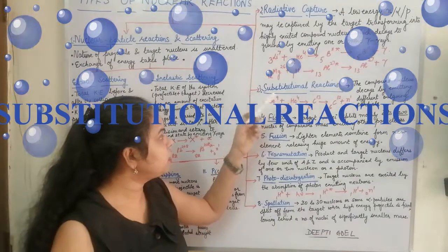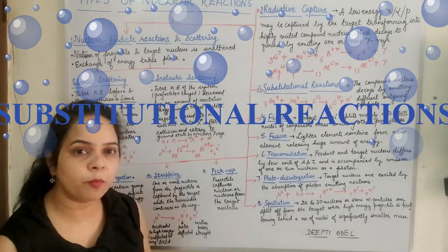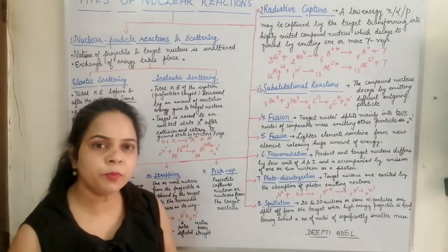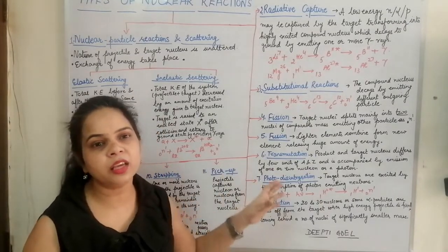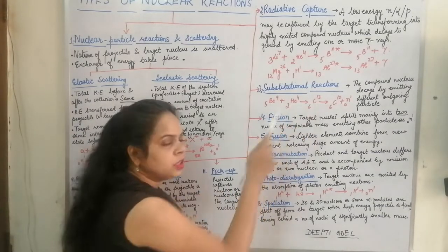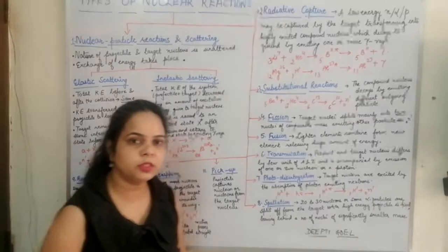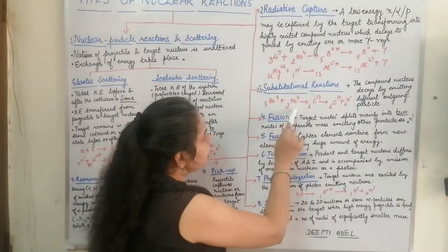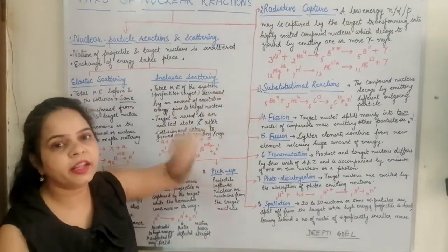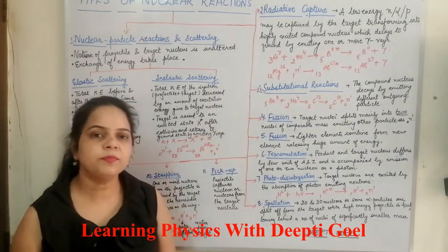The third type is the substitutional reaction. Here, a compound nucleus is also formed, but it gives out a product nucleus and a particle different from the incoming particle. For example, alpha particles strike beryllium to form carbon-13, which then decays by giving out a neutron and carbon-12. The incoming particle was an alpha particle but the outgoing particle is a neutron. If a gamma ray had been emitted, it would be radiative capture, but since the particles are different, this is called a substitutional reaction.